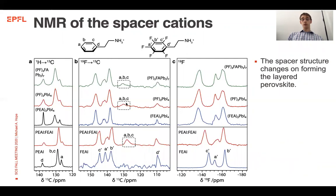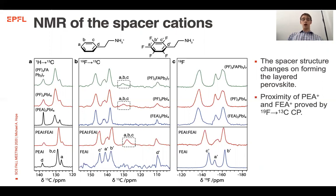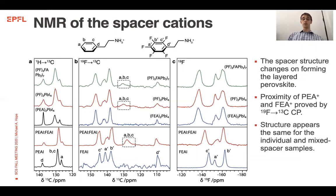Furthermore, in the fluorine-to-carbon spectra of the mixed spacer perovskites we see signals which arise from the protonated molecule. This means that the protonated molecule must be near fluorines and the spacers must be intimately mixed. However, for the individual spacer perovskites — both the protonated and fluorinated — we see the same shifts as for the mixed spacer perovskites, which suggests that they have the same structure.